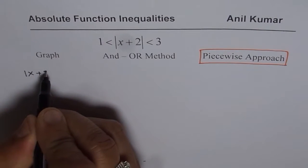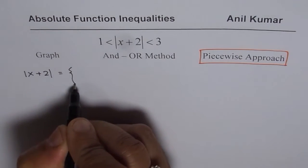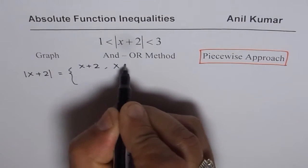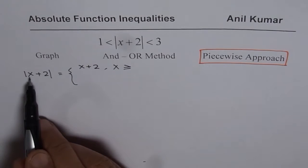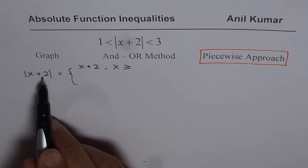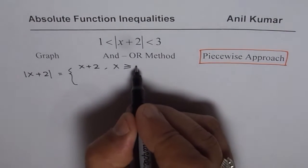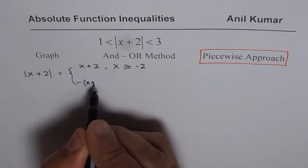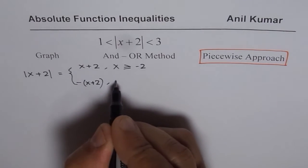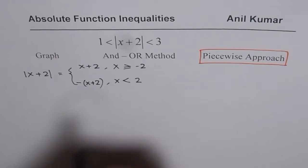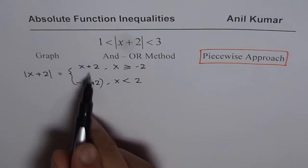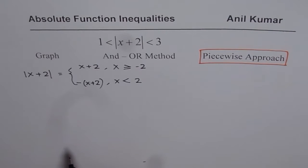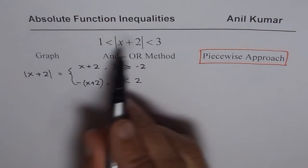The absolute value of x plus 2 can be defined as equal to x plus 2 when x is greater than or equal to minus 2, because at minus 2 it is 0. On the right side it is positive, and on the left side it is the negative of x plus 2. That is how we can define the absolute function. Once we have defined it as a combination of two pieces, it becomes a piecewise function. We will then rewrite the inequality.